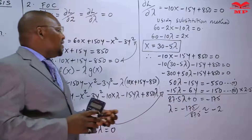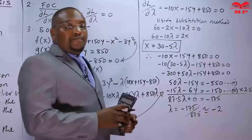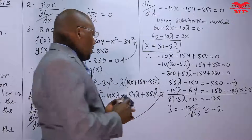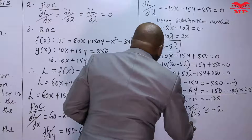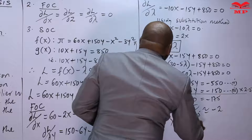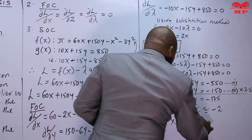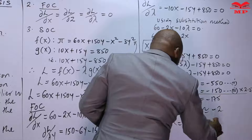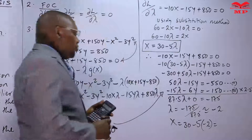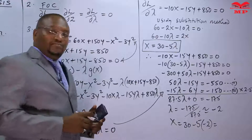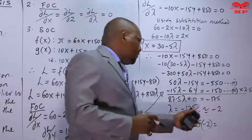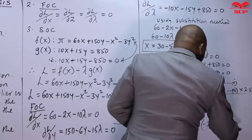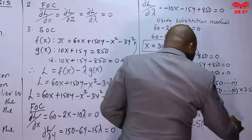With λ = −2, we substitute back into x = 30 − 5λ: x = 30 − 5(−2) = 30 + 10 = 40. So x = 40 units of the first product.